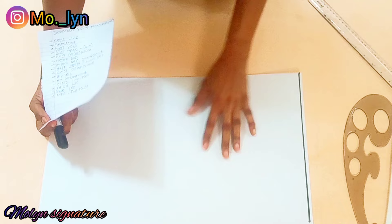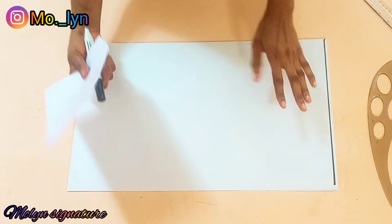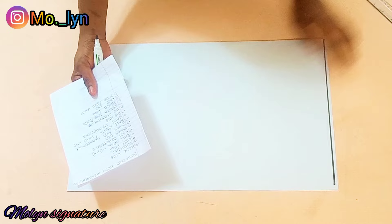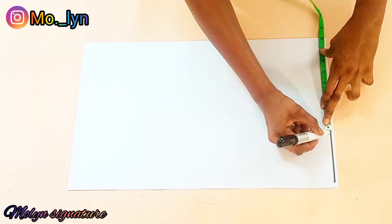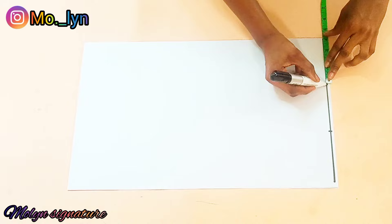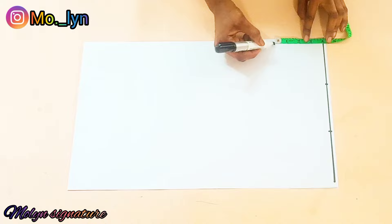I'm going to input these measurements into my pattern. First of all I'll be drafting the basic bodice — if you want more details on how to draft a basic bodice, I have a video on my channel and I'll put the link on screen. So you can see that I have drawn a straight line at the top of my pattern paper that will serve as my shoulder line, and I also went ahead to mark the width and depth of my neckline, which is four inches by four inches. I'm just going to connect this with my curve drawer to form a neckline curve.